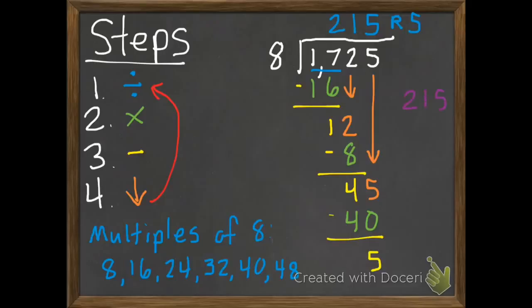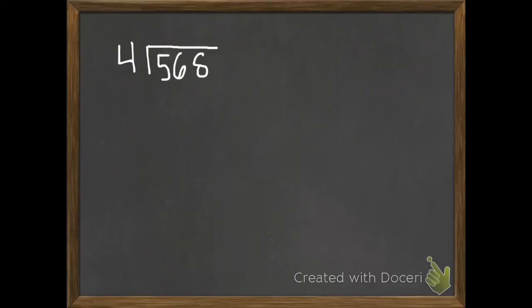I'm going to check my work. So 215 times 8. 8 times 5 is 40. 1 times 8 is 8 plus 4 is 12. 8 times 2 is 16 plus that 1 is 17. And I still have my remainder of 5. So I need to add that in. So plus 5, which is 1725, which is exactly what I started with. Which is good.